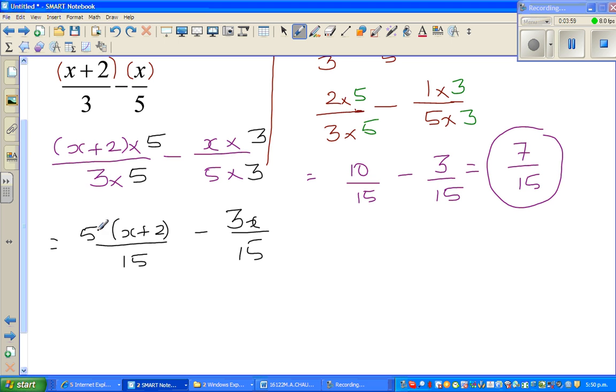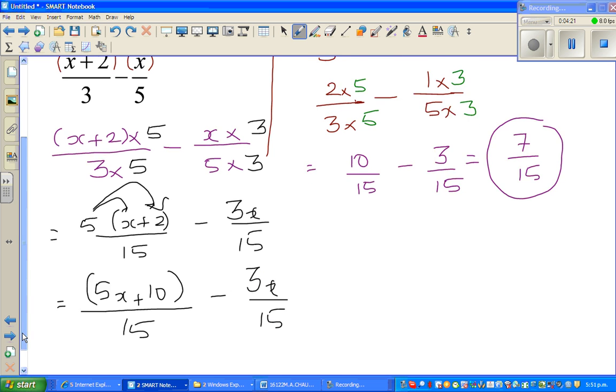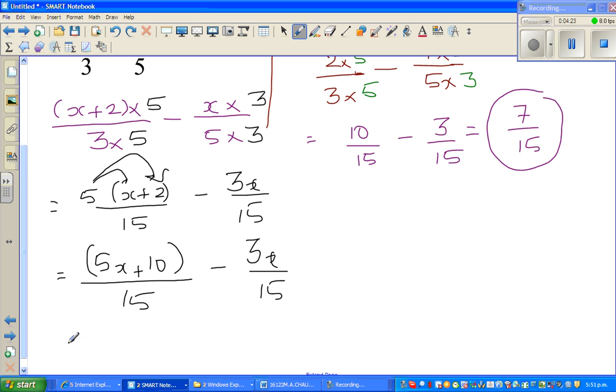Here you have to simplify or expand this or distribute this. 5 times x is 5x plus 5 times 2 is 10. I will put this in brackets. It is always good to put this in brackets. [5x + 10]/15 minus 3x/15. Now, as you can take away here, you can take away the numerators. This is (5x + 10 - 3x)/15.